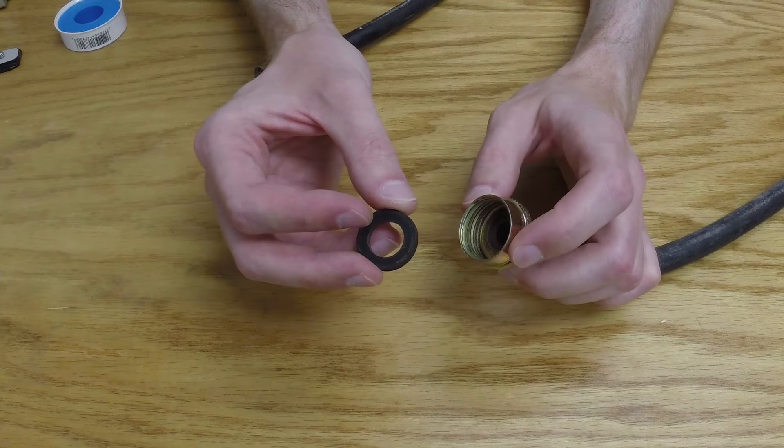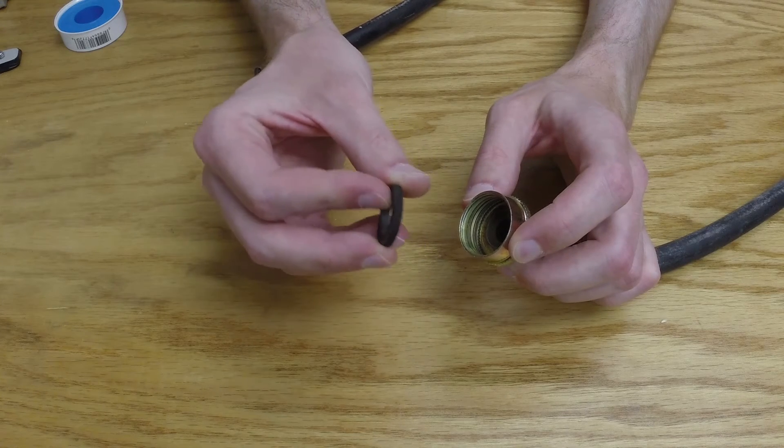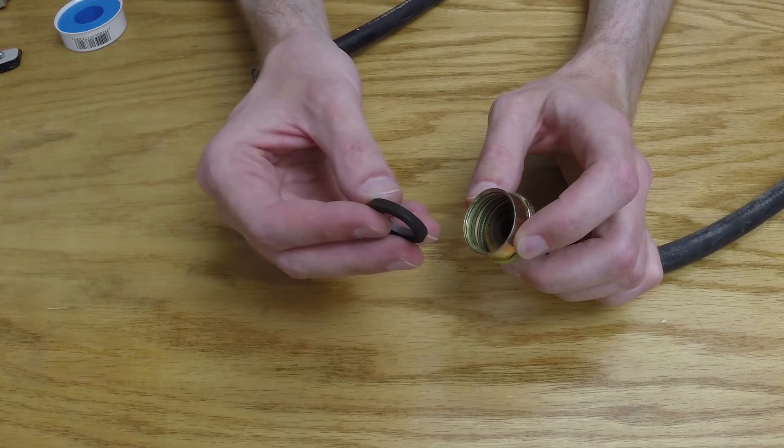So as you tighten the fitting, this gasket is squeezed. Specifically, it's squeezed and deformed in such a way that the voids between our two mating surfaces are filled.